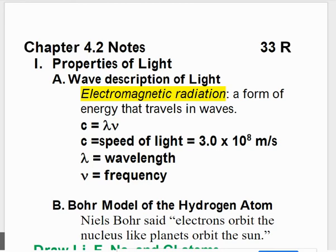A quick recap of 4.1. Electromagnetic radiation is a form of energy that travels in waves. The equation c equals lambda times nu can be used to find the wavelength or the frequency of light or electromagnetic radiation. Speed of light is a constant, 3.0 times 10 to the 8th meters per second. If the wavelength goes up, then the frequency needs to go down. And if the wavelength goes down, then the frequency needs to go up to keep this equation true.